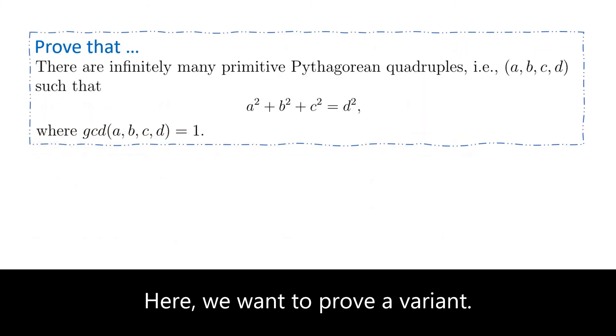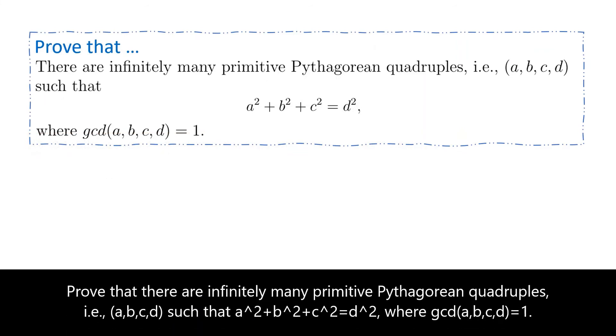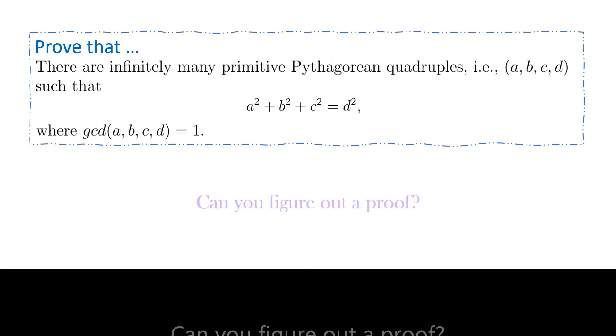Here, we want to prove a variant. Prove that there are infinitely many primitive Pythagorean quadruples. That is A, B, C, and D such that A square plus B square plus C square equals D square, where GCD of A, B, C, and D equals 1. Can you figure out a proof?